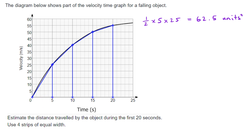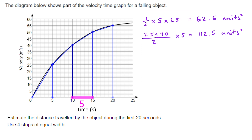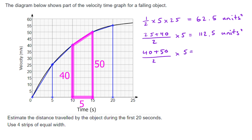For the second shape, a trapezium, we take the average of the two parallel sides: 25 and 40. That's 65, half of which is 32.5, multiplied by the width of 5, giving 162.5. Wait - 25 + 40 = 65, half is 32.5, times 5 is 162.5. The next trapezium has a width of 5, with heights 40 and 50. Adding gives 90, half is 45, multiplied by 5 gives 225.